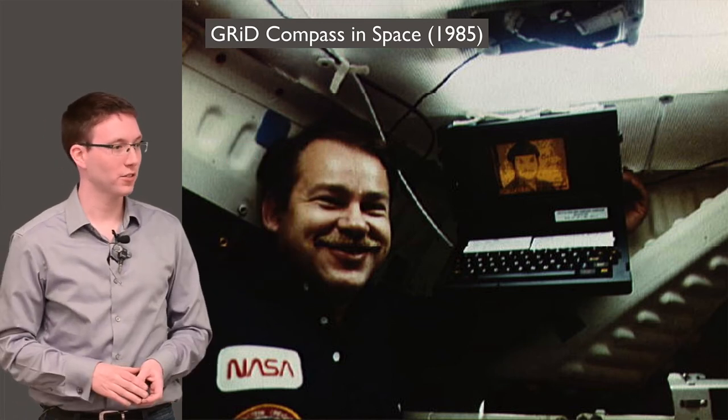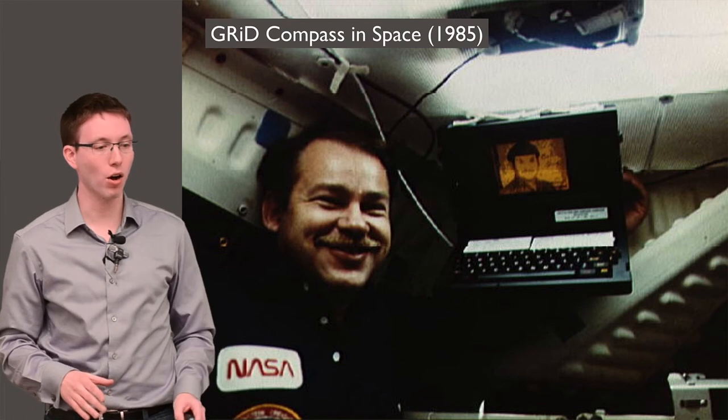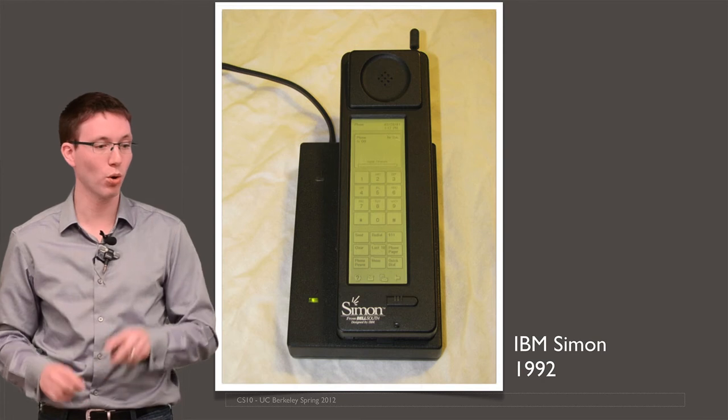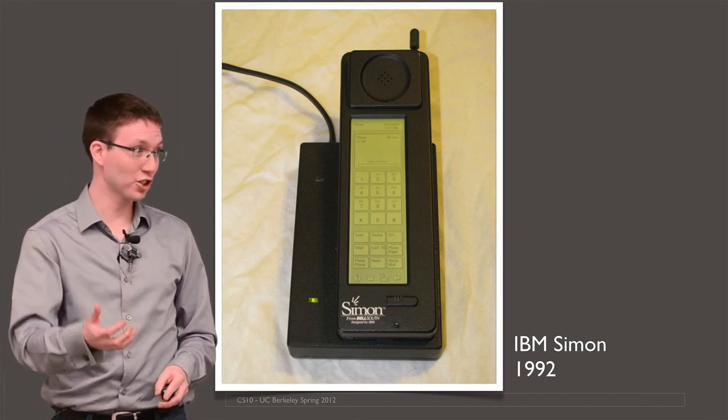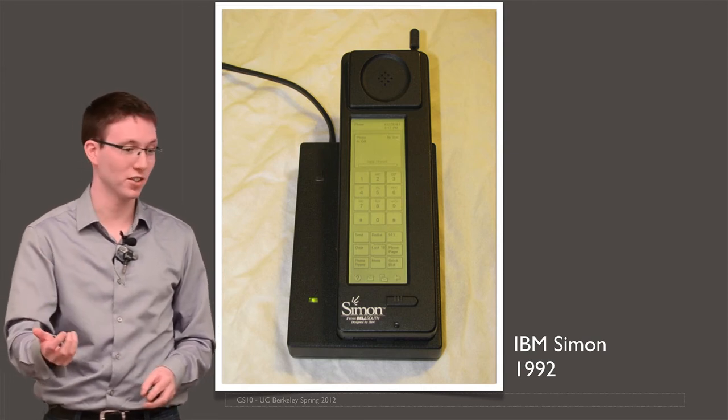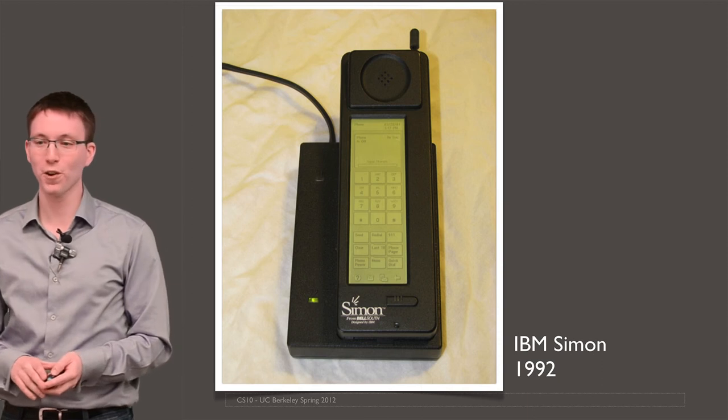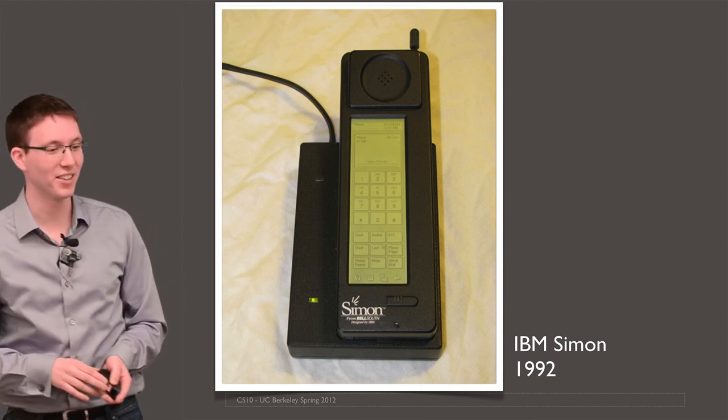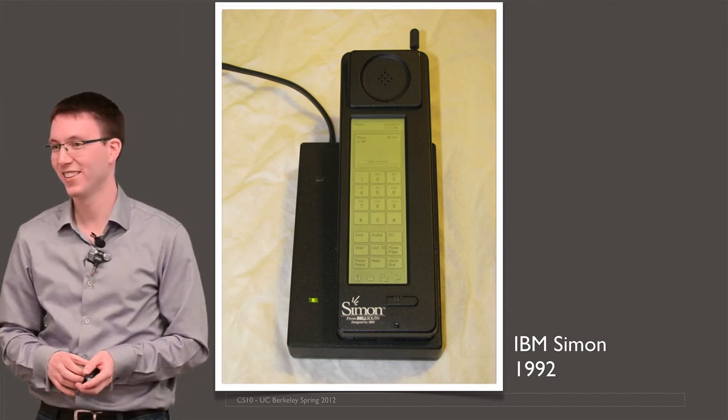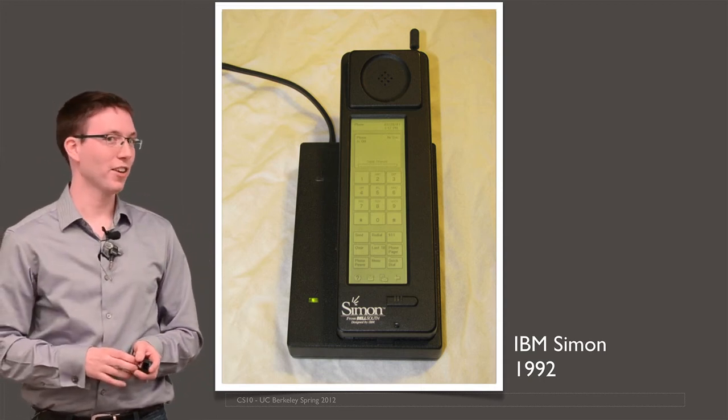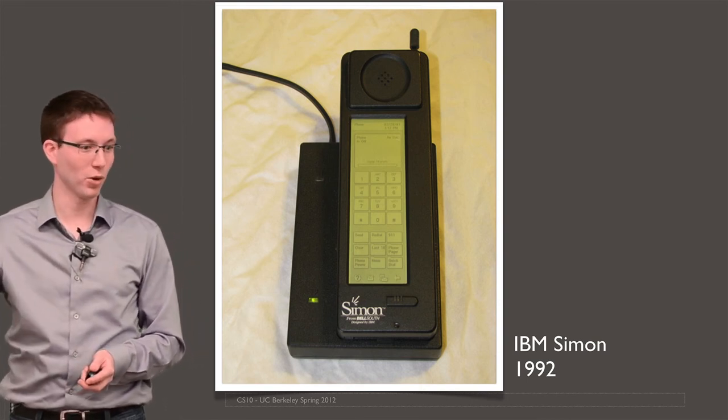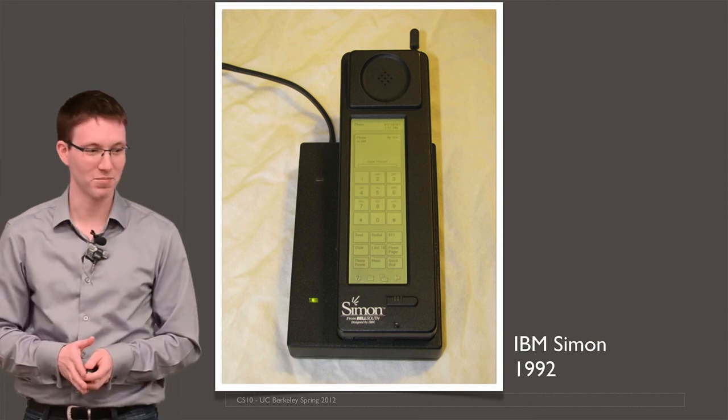This was not touch sensitive. However, it didn't take long from the GridPad till we were at a stage where you could go out into a store and buy a phone that had a touch screen that did email and also ran games and other applications. And the first phone that did that was the IBM Simon, sold in 1992. I don't think anyone in this room has ever used one. I've never seen a real one.